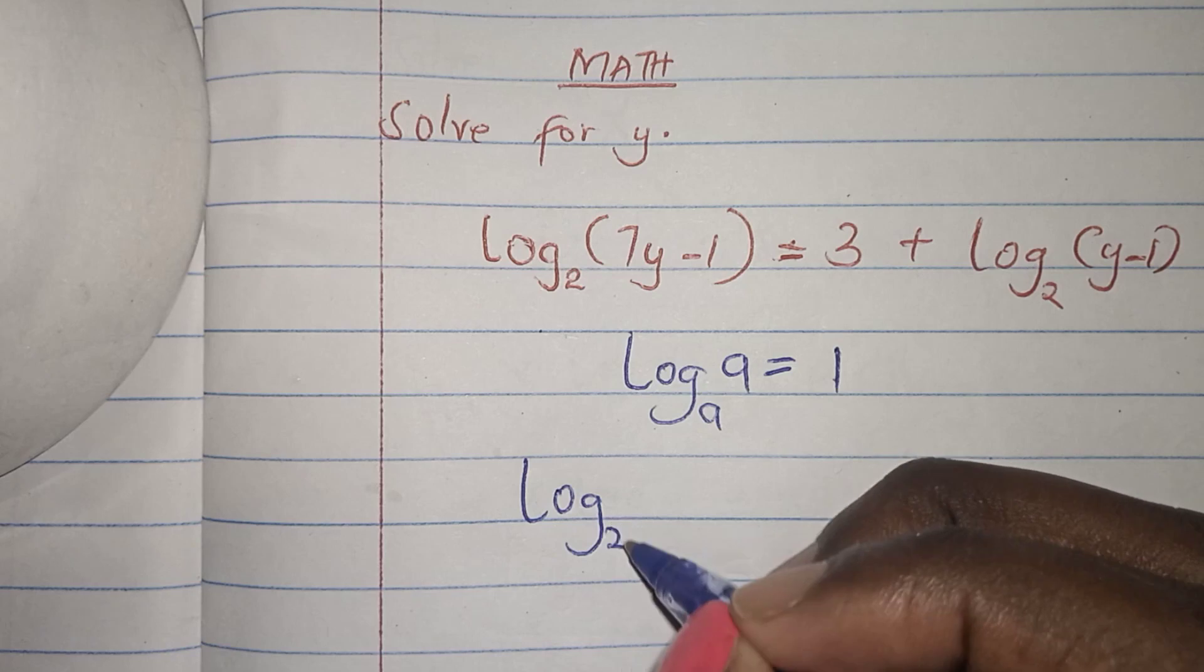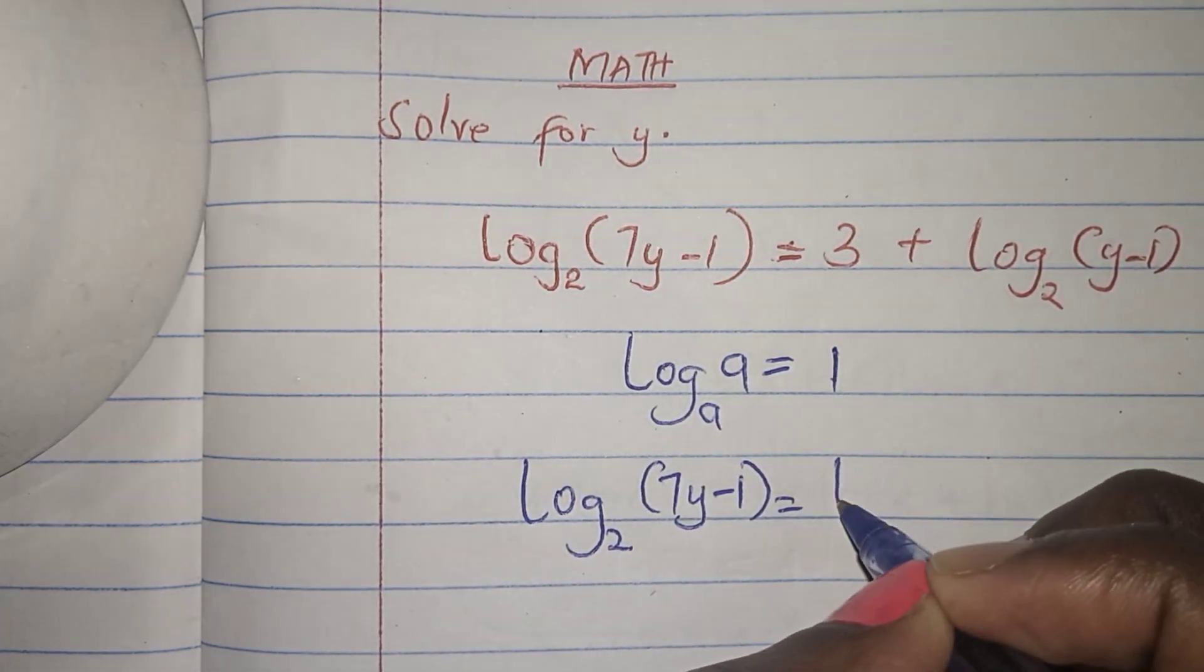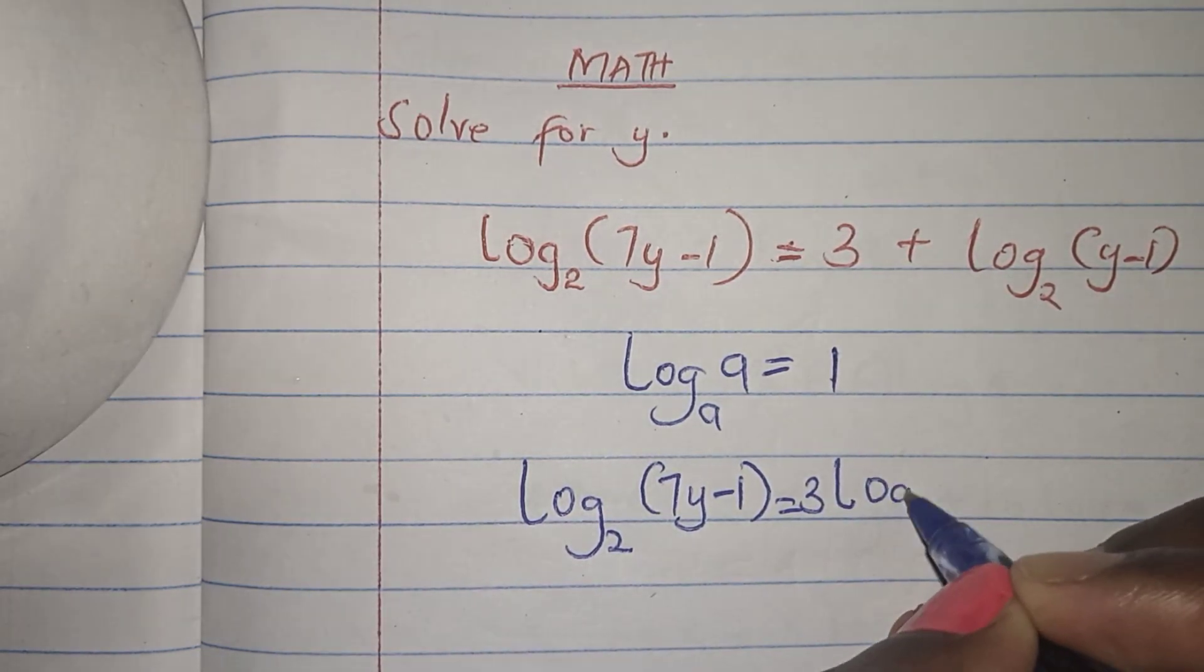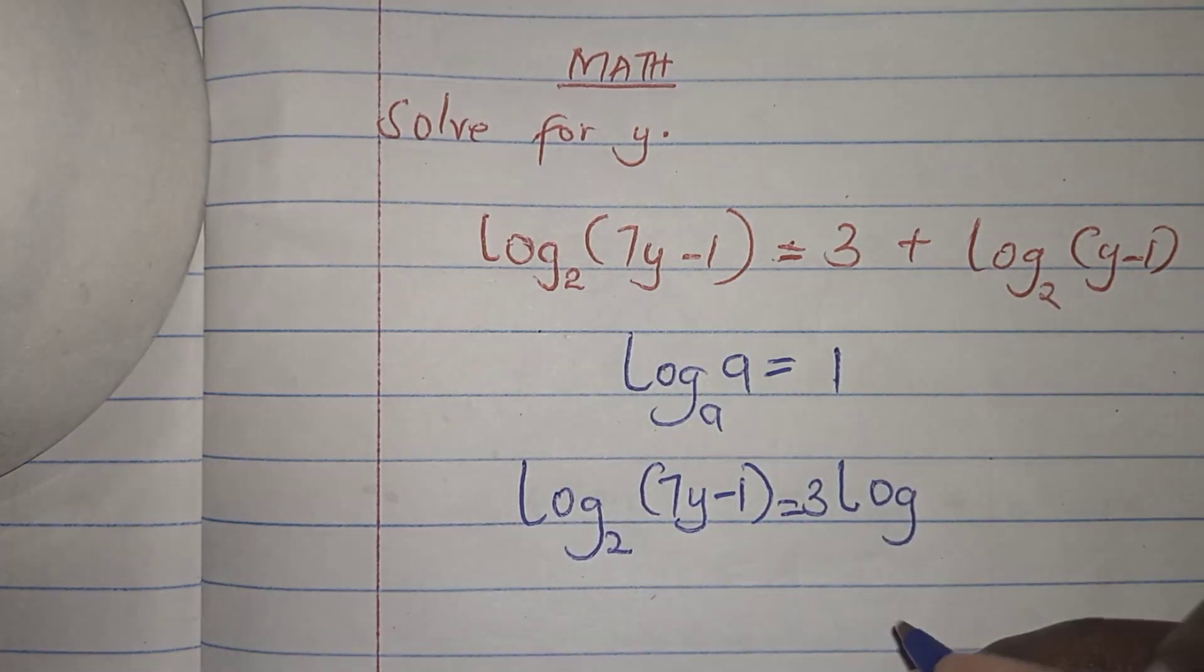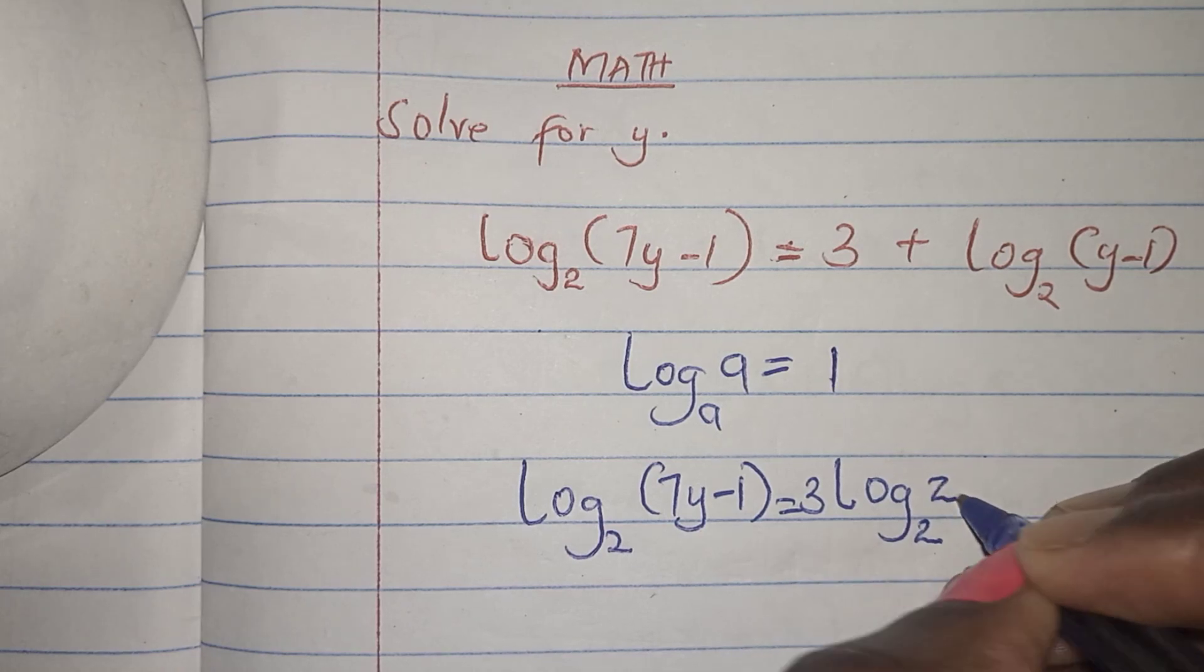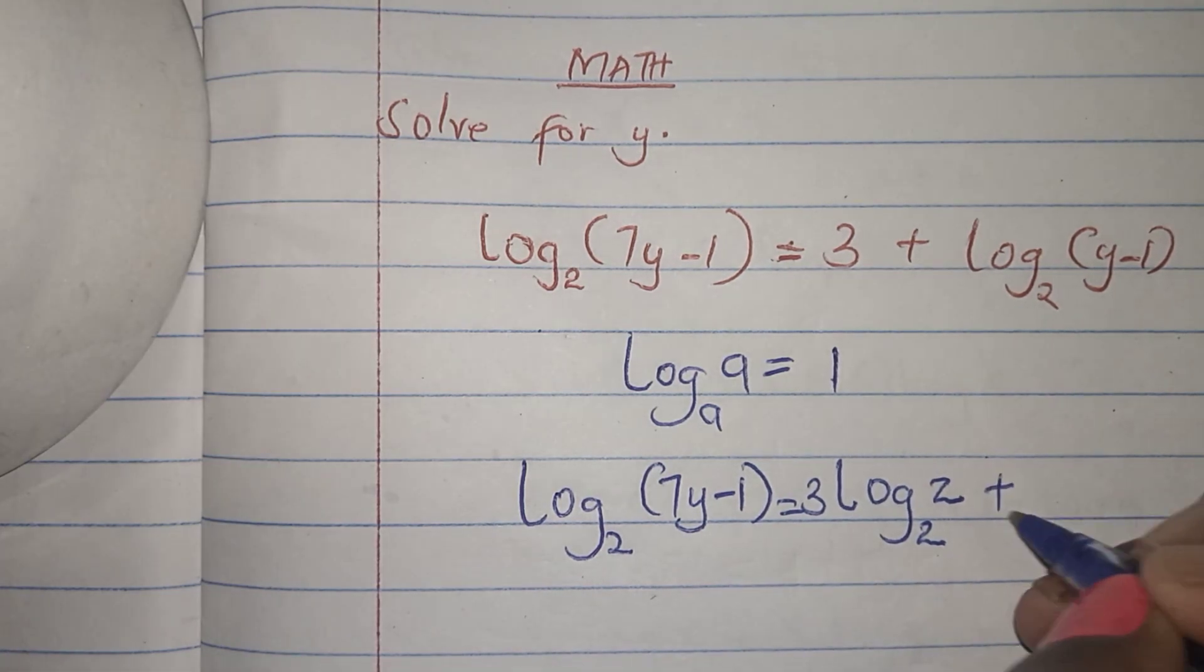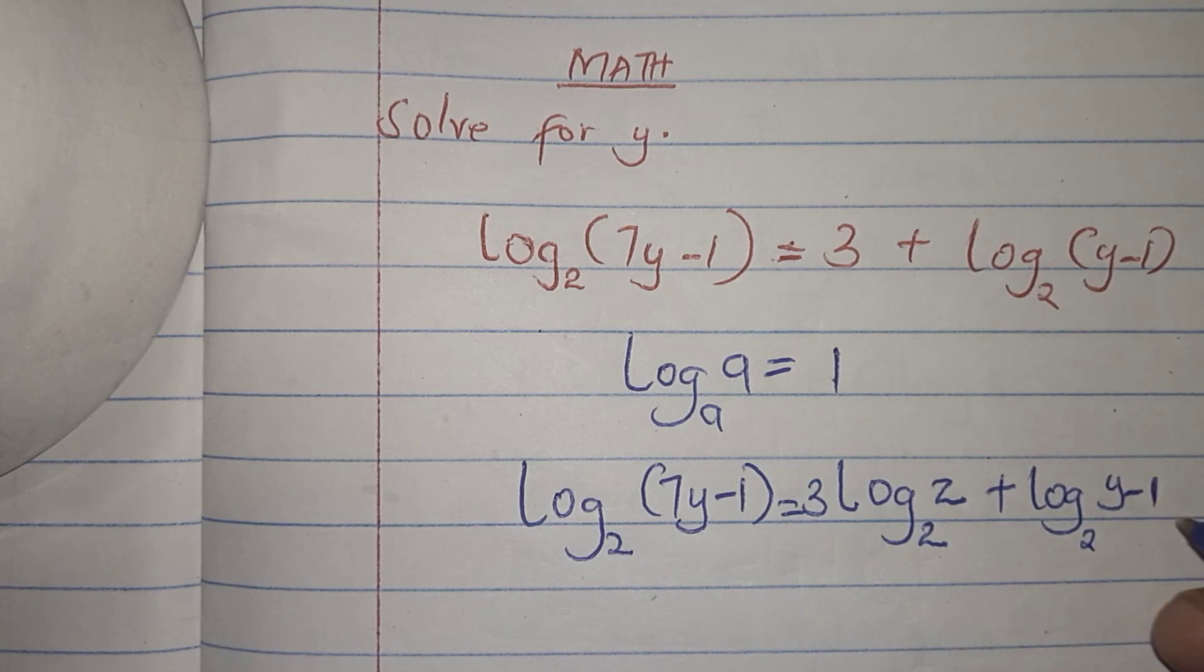So log base 2 (7y - 1) equals - this 3 here - because it's base 2 on this side and it's also base 2, I can make it base 2. So this 3 I've written into logarithm terms: 3 log base 2 of 2, plus log base 2 (y - 1). This is the first step.